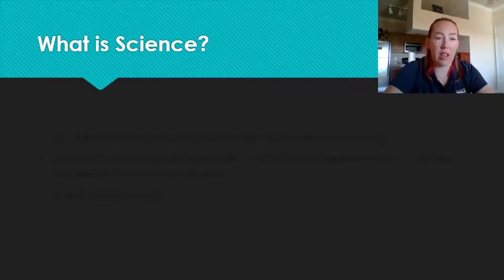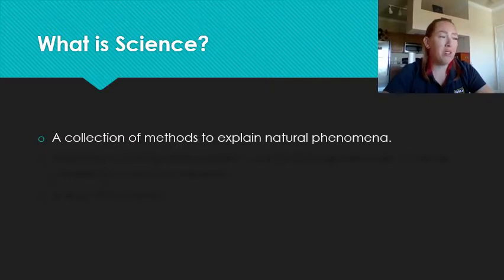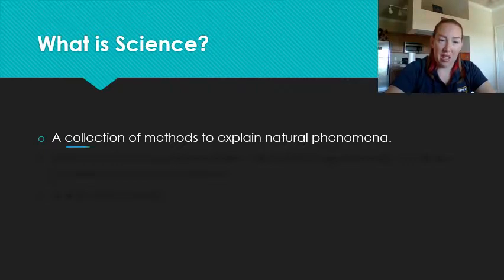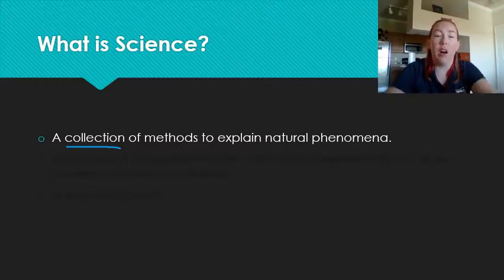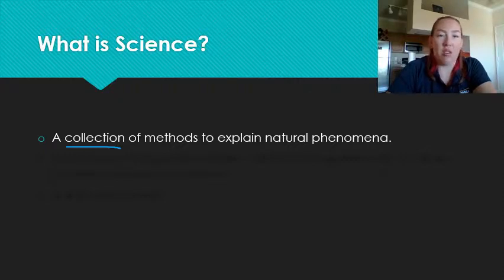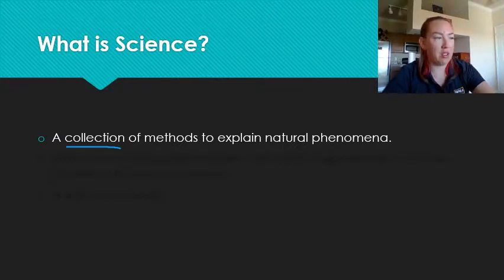In reality, there are many different methods in science. There's a whole collection of methods based on the particular field that you're in, and different fields have multiple methods as well. They happen in many different orders with many different steps. We'll talk about what those are. All processes of science do have something in common. I'm going to use the word processes of science rather than the scientific method because it's better.